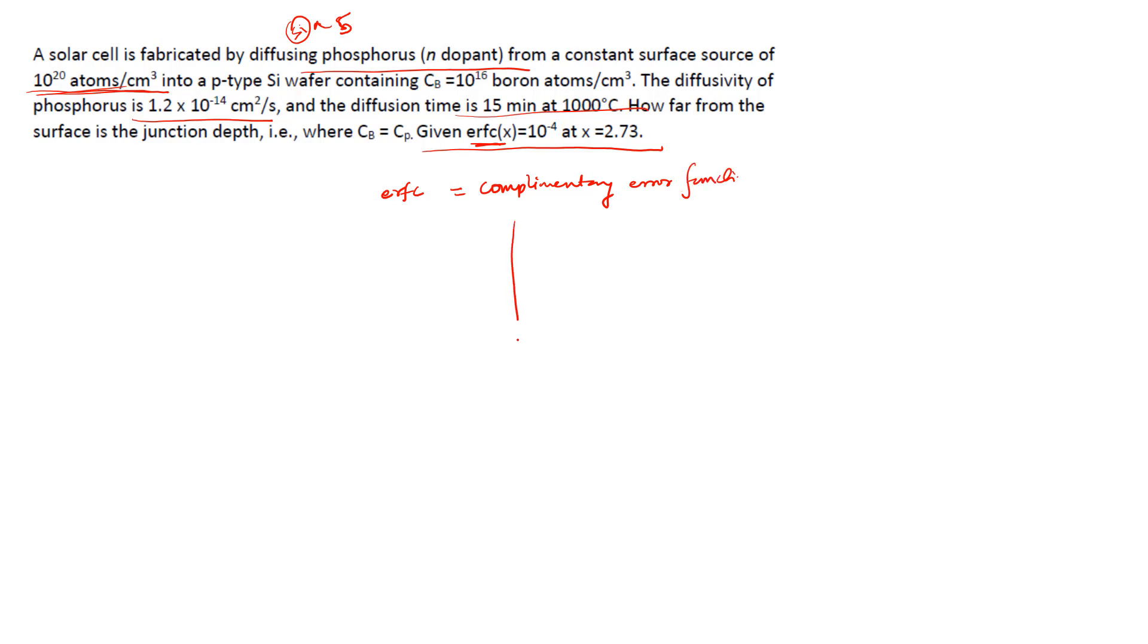In the case of error function, what are the values it can have? The graph looks something like this, from minus 1 to plus 1. The maximum value of error function can be plus 1 and the minimum value it can be minus 1.